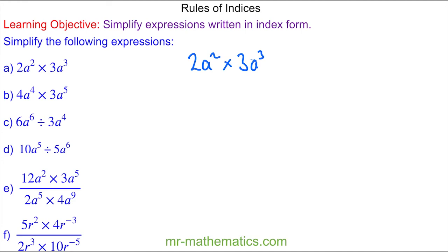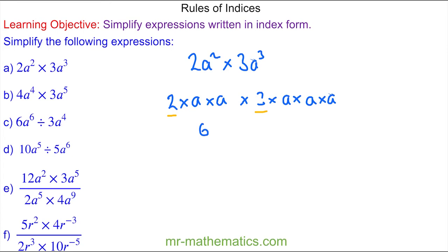We're going to write it out as one long multiplication. So you can see we have 2 multiplied by a squared multiplied by 3 multiplied by a cubed. So we have 2 times 3 which is 6, and then we have 1, 2, 3, 4, 5 — a multiplied by itself 5 times — so it is 6a to the power of 5.